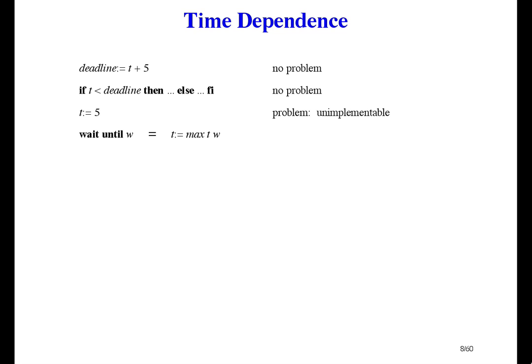In other words, increase the time variable to w, unless t is already bigger than w, in which case we just leave it alone. We can't make time go backwards. And leave all other variables unchanged.